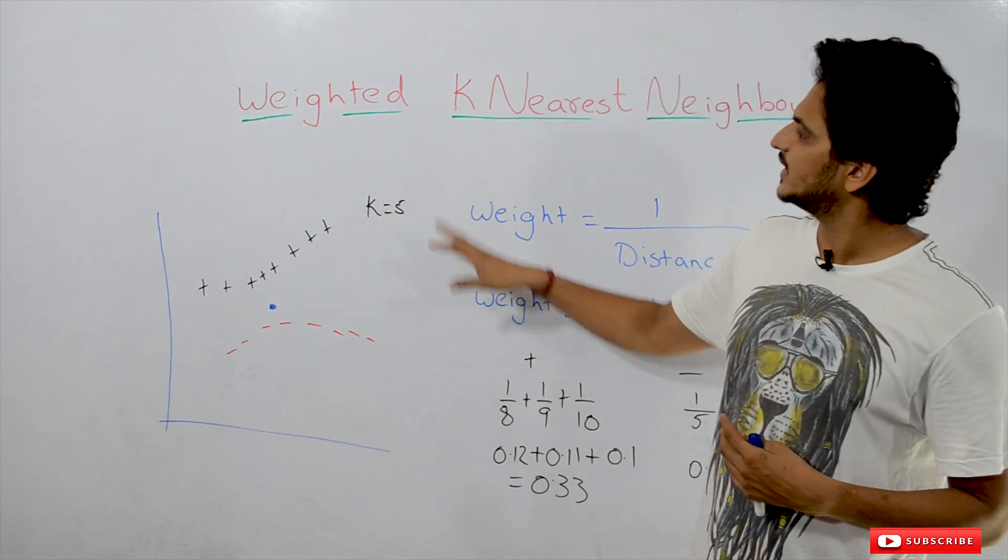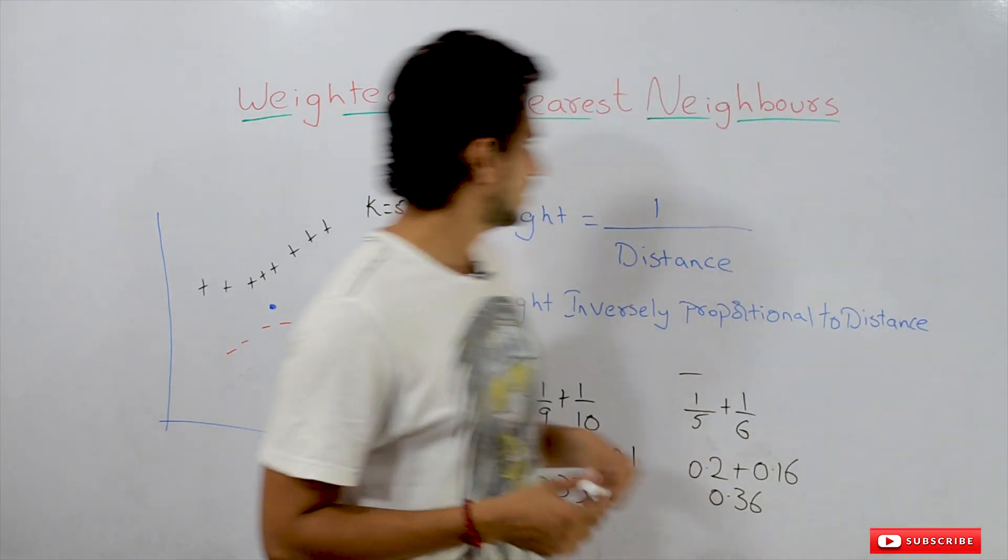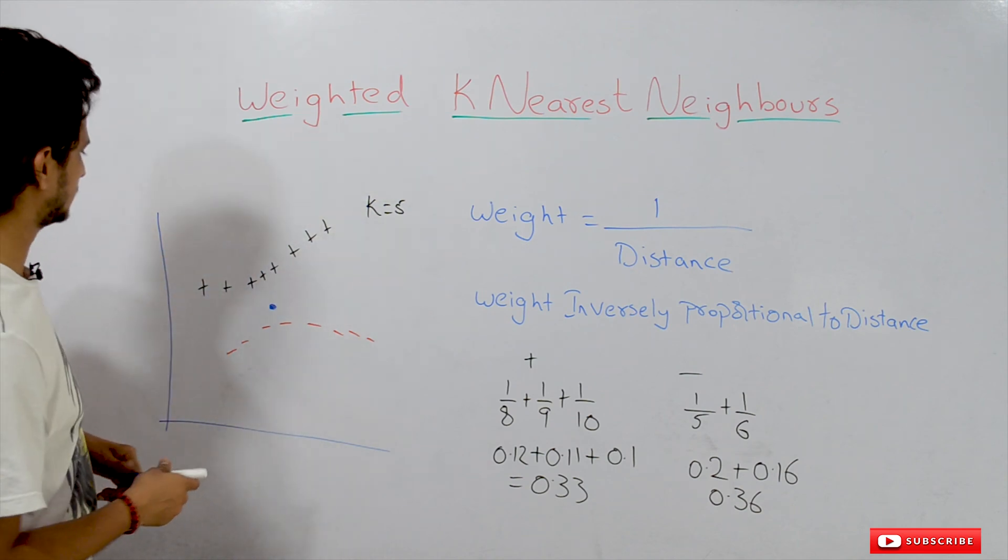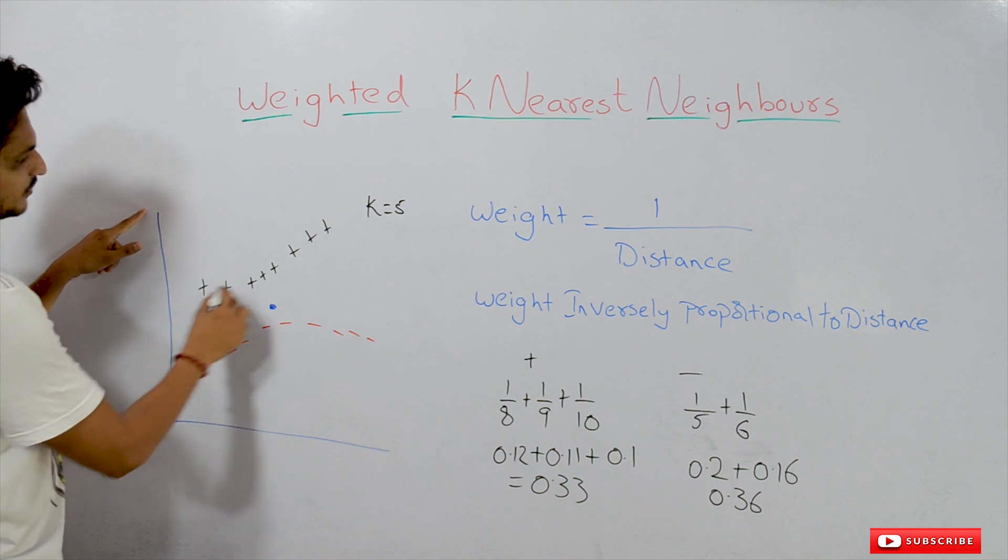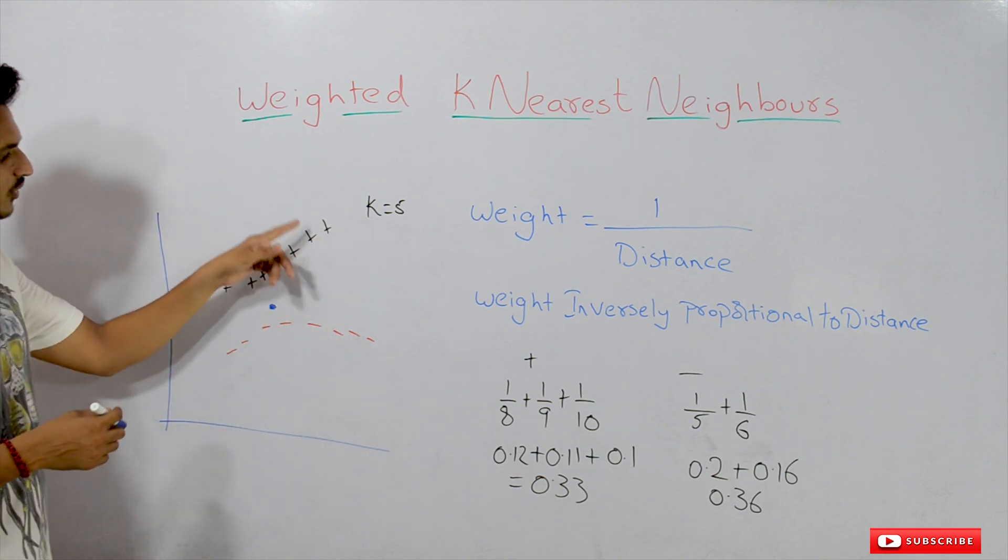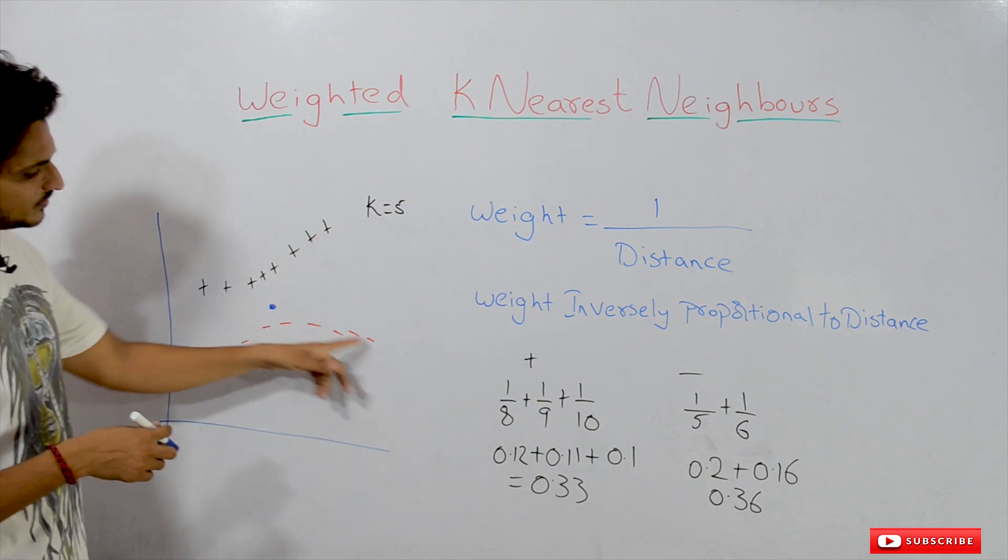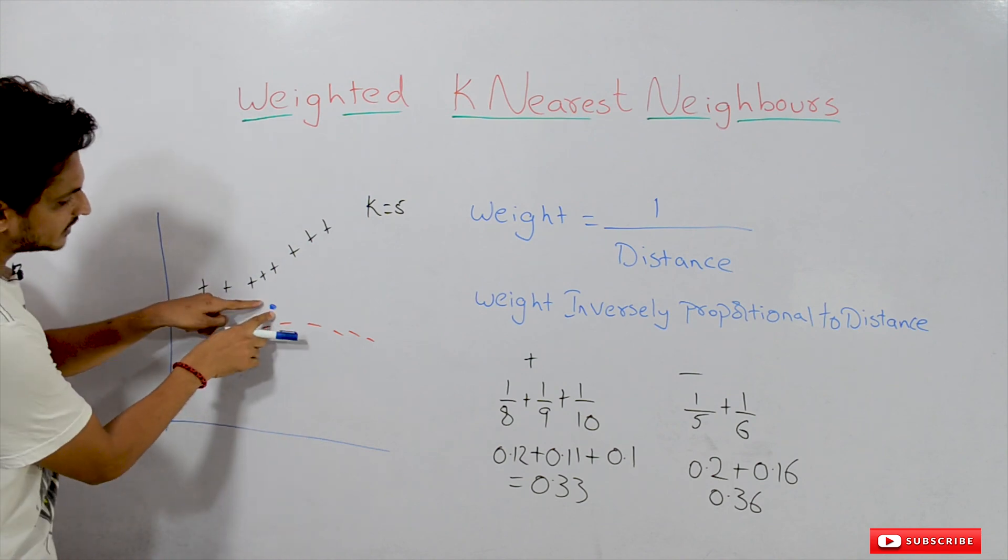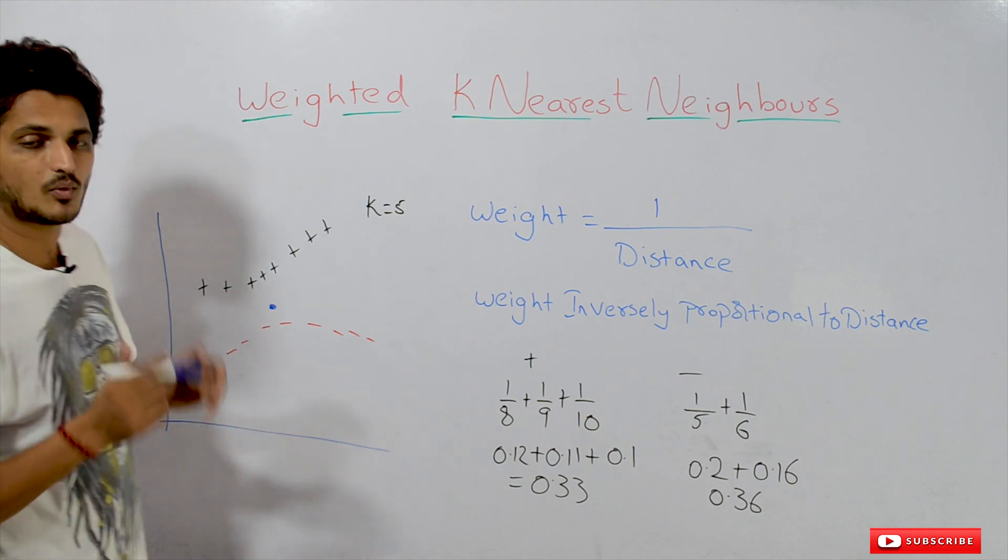Coming to weighted k-nearest neighbors, let's take an example and understand how it works. So let's take this data set. We are having positive data points - these black points are called positive data points. Red color points we call negative data points. This blue point, let's take it as a testing data point.